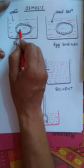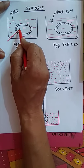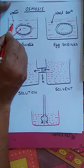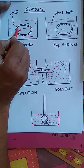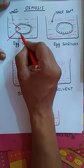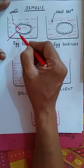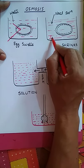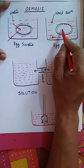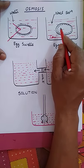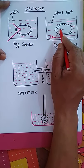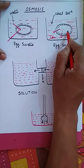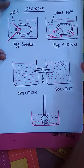The concentration of albumin inside the egg is more than water, so osmosis takes place — water molecules enter the egg, causing it to swell. But the egg put in NaCl solution, which is more concentrated than the egg albumin, causes the reverse process: molecules from the egg come out into the solution, and the egg shrinks. This is also due to osmosis.